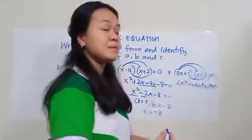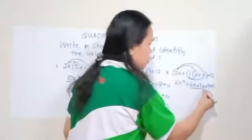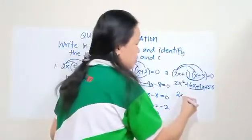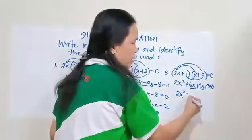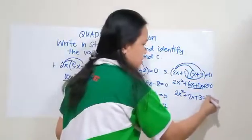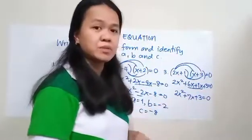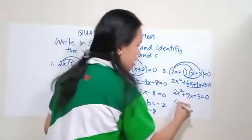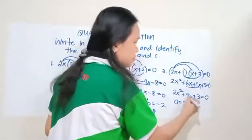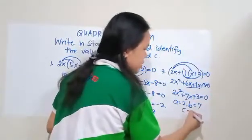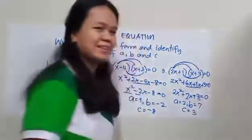And then combine similar terms. So that means you have to combine 6x and 1x. So it's 2x squared. 6x plus 1x is 7x. Plus 3 equals 0. So now this one is already in standard form. So let us find the values of A, B, and C. So here, your A is equal to 2. Your B is equal to 7. And your C is equal to 3.